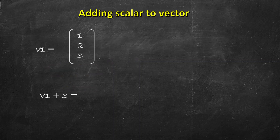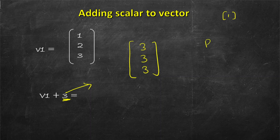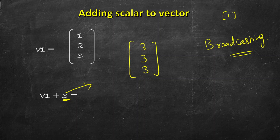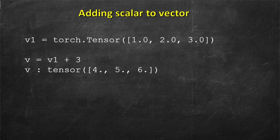Next let's see what happens when we add a scalar to a vector. A scalar has just one element and the vector can be of any shape. The scalar is treated as a vector with the same number of elements, each one repeated — so scalar 3 behaves like the vector 3, 3, 3. This phenomenon is called broadcasting, and it works in one dimension, two dimensions, or even higher dimensions. The result is that 3 is added to all elements individually: 1 plus 3 is 4, 2 plus 3 is 5, 3 plus 3 is 6. In PyTorch you simply do vector plus 3 to get the result.